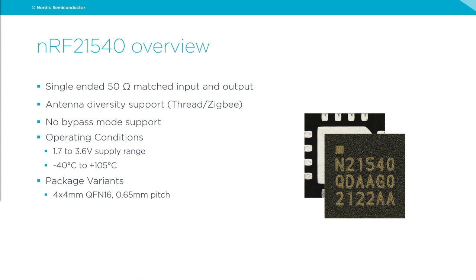The front-end module has both a PA and an LNA with no bypass mode support — when transmitting you always use the PA, and when receiving you always use the LNA. This is designed to ensure best performance on the receive side. The device supports the same operating voltage ranges as the 52 and 53 series: 1.7 to 3.6 V, and the same extended temperature range of -40 to +105°C. It comes in a single package option: a 4×4 mm QFN-16 with 0.65 mm pitch — small but easy to assemble, and QFN packages are excellent for RF performance.